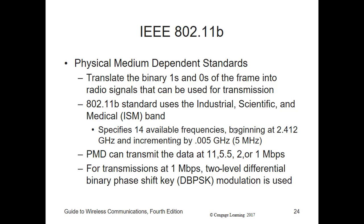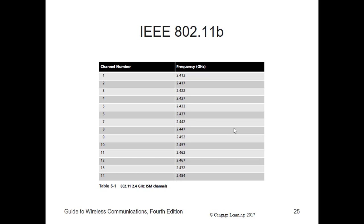The 802.11b standard uses the Industrial, Scientific, and Medical (ISM) band of 2.4 GHz for transmission. For use in the 802.11 and 802.11b standard, it specifies 14 available frequencies beginning at 2.412 GHz, incrementing by 0.005 GHz — that is, 5 MHz per channel — except for channel 14. Those are the 14 channels available for the 2.4 GHz range for 802.11b.